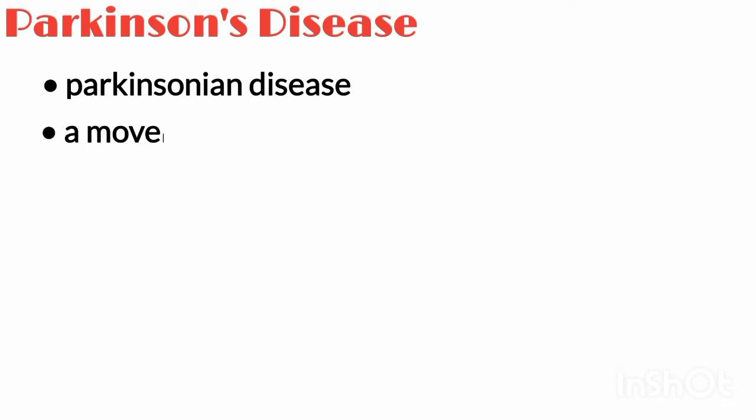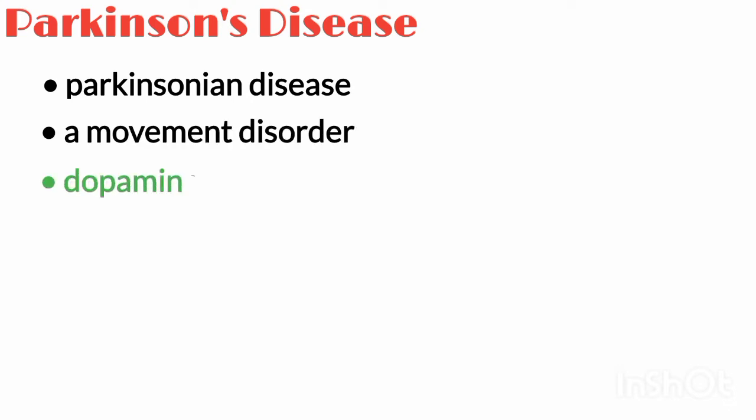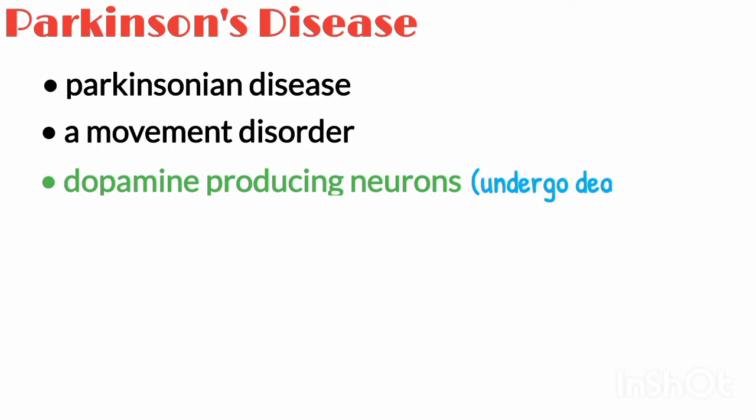Parkinson's disease, which is sometimes called Parkinsonian disease, is a movement disorder where the dopamine-producing neurons in the substantia nigra of the brain undergo degeneration.